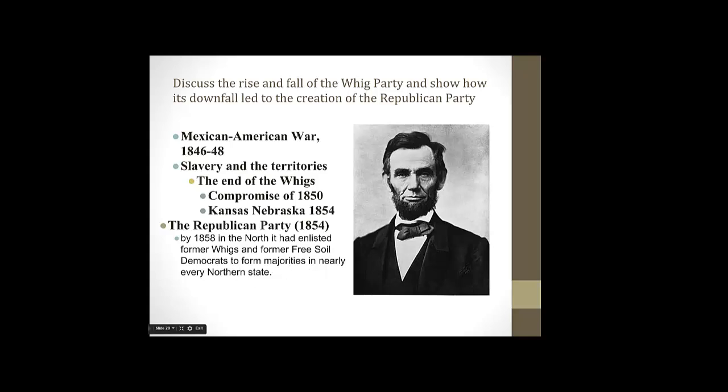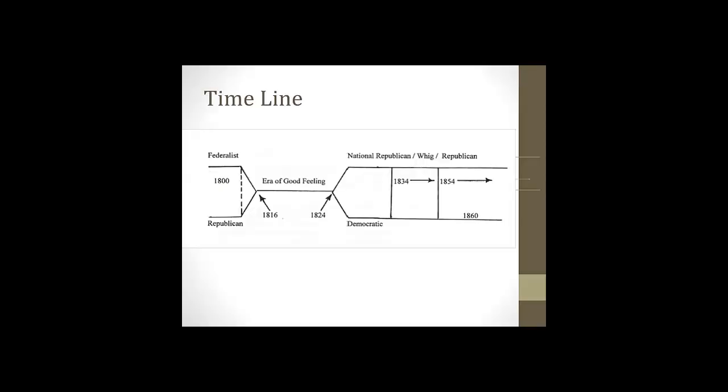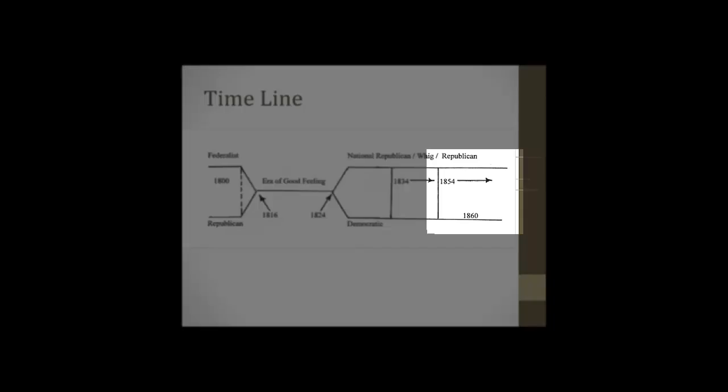Going back to our timeline, we can see the Republicans come into power by the 1860s, and we now have the modern two-party system that we're very familiar with — the Democrats and the Republicans.